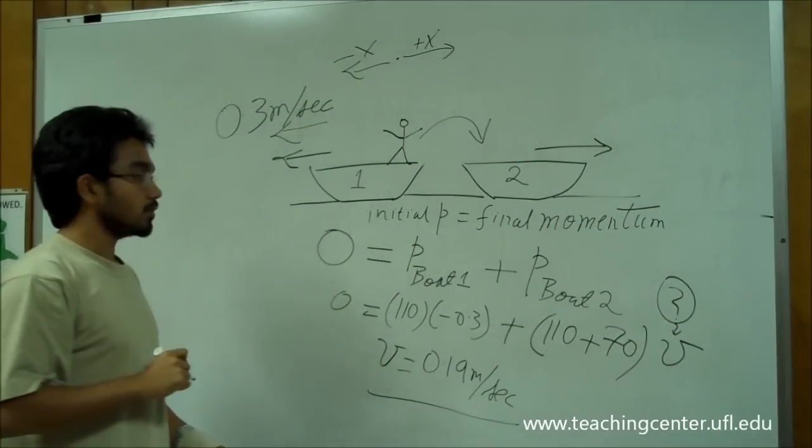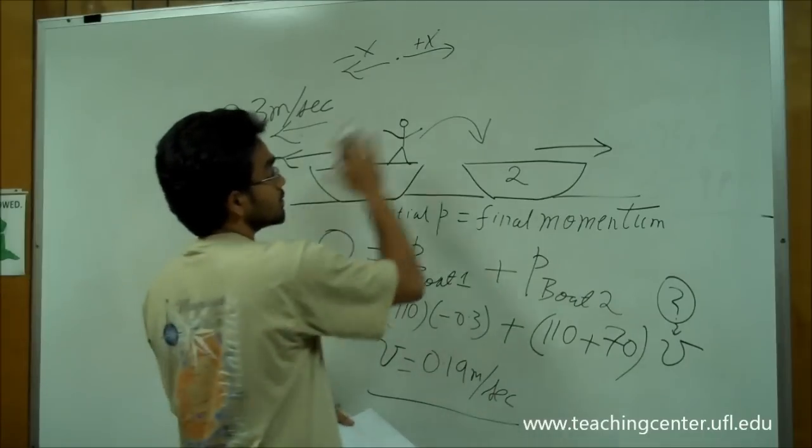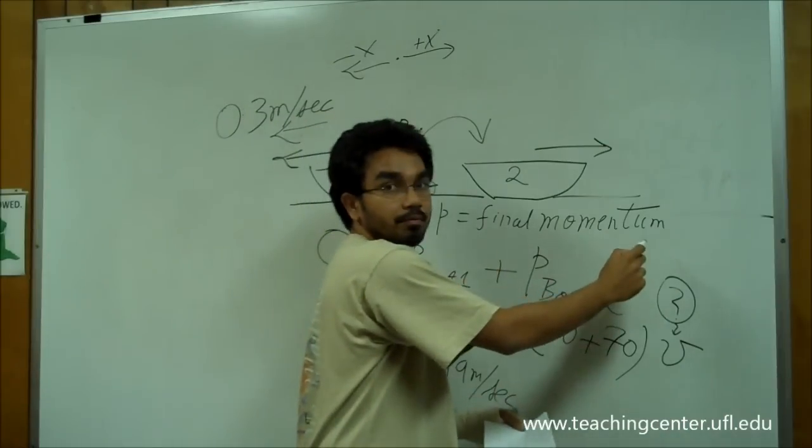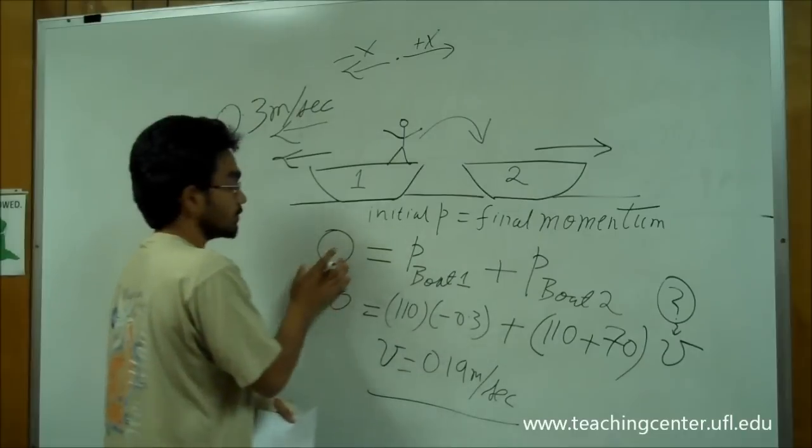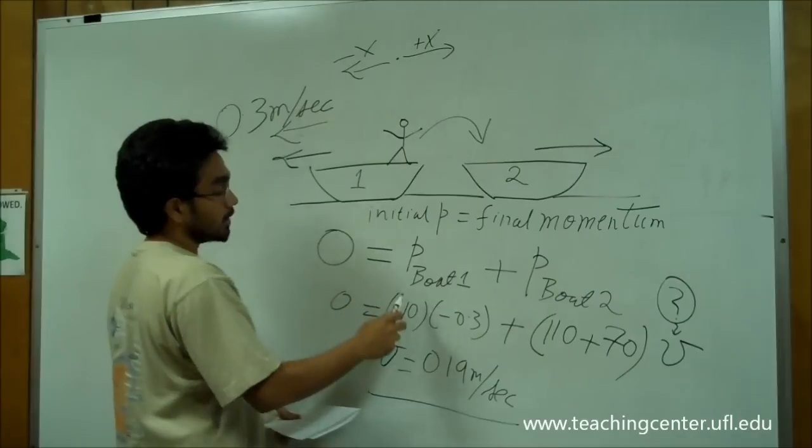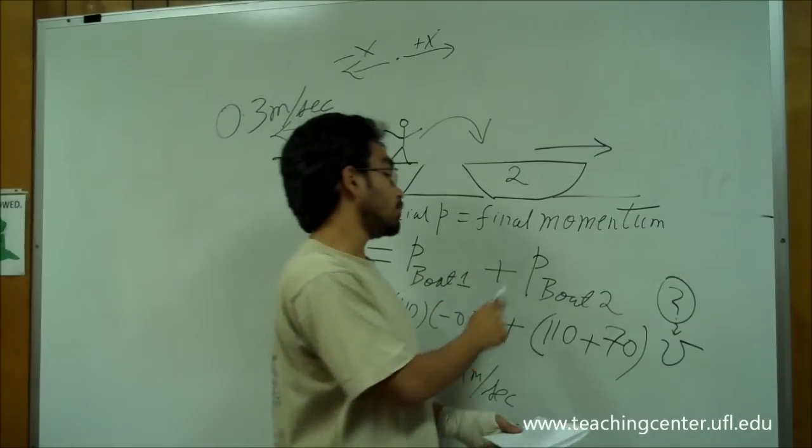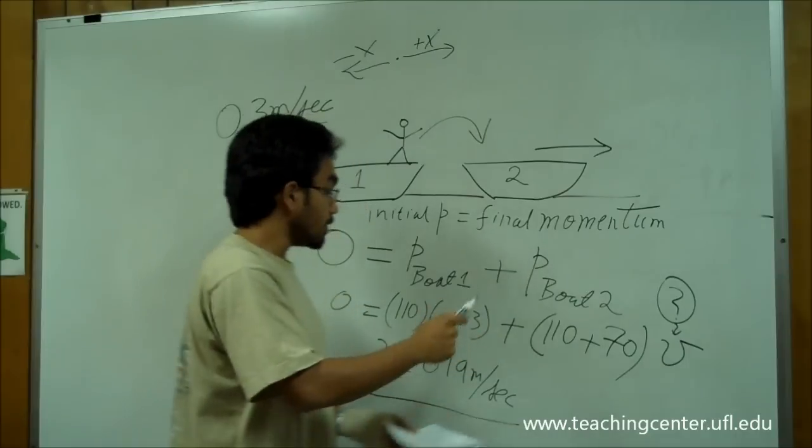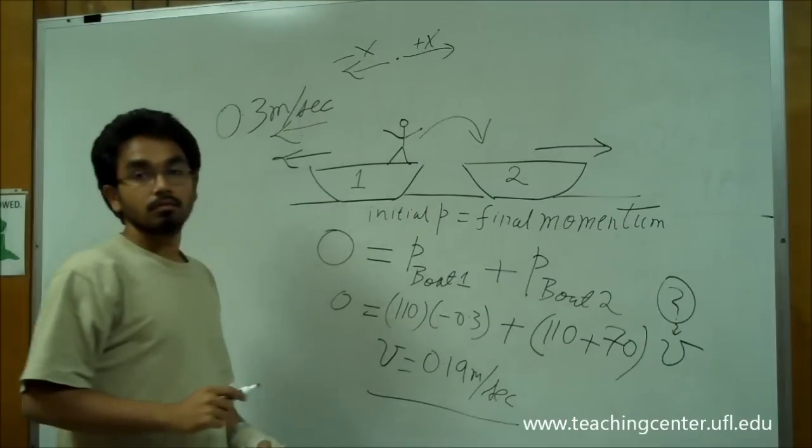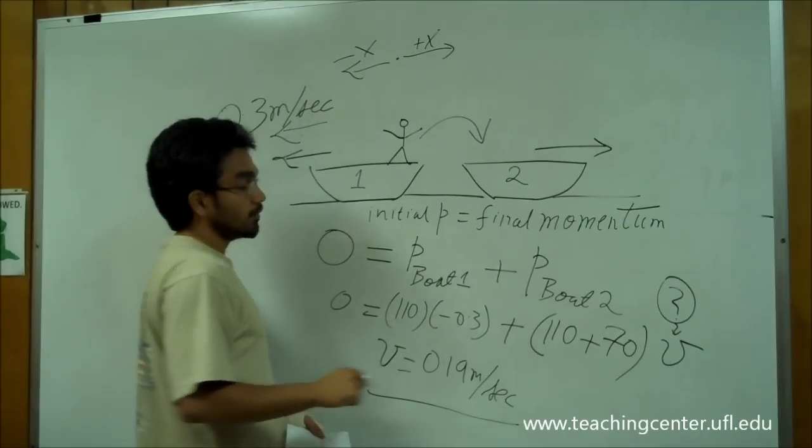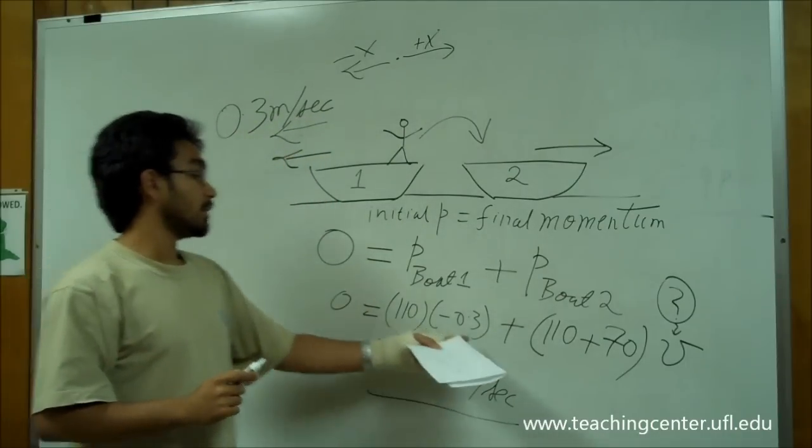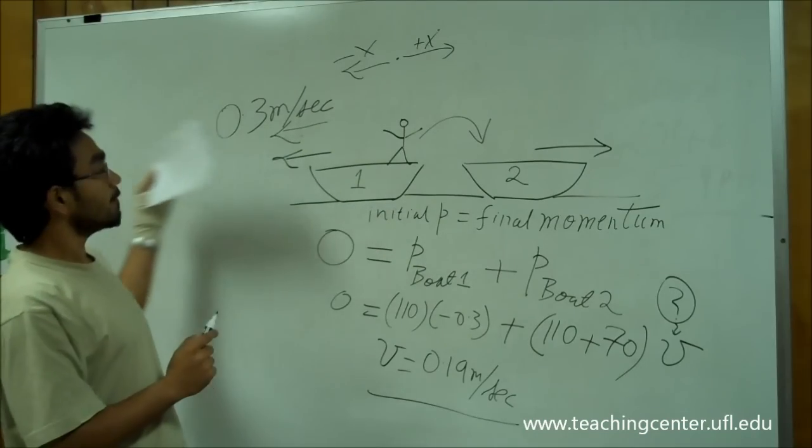Okay? So, we wrote that, since there is no external force to the system, initial momentum is equal to final momentum. Initial momentum was 0, because there was nothing moving, and final momentum is momentum of boat 1 system, plus boat 2 system. We noted that the boat 2 system consists of the man and the boat, both moving at v in that direction. The boat 1 system consists of the boat moving at 0.3 meters per second in the reverse direction.